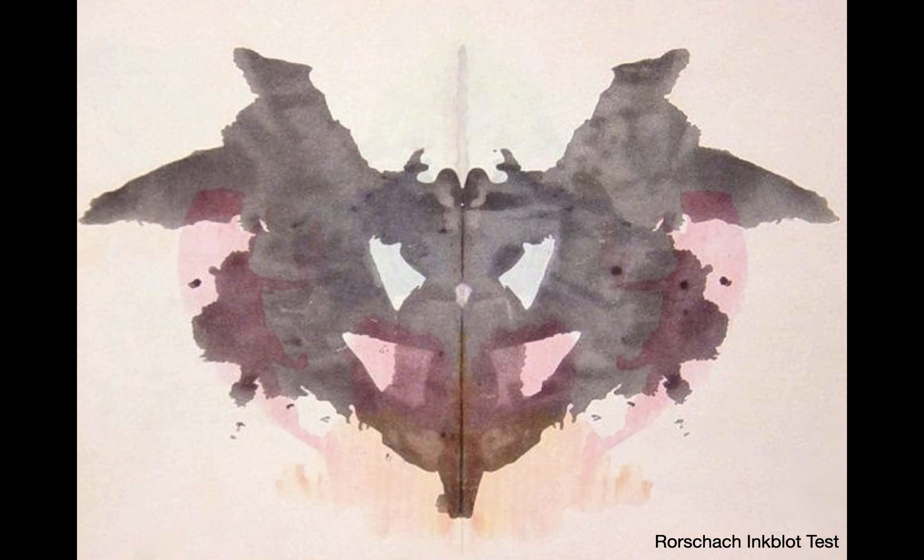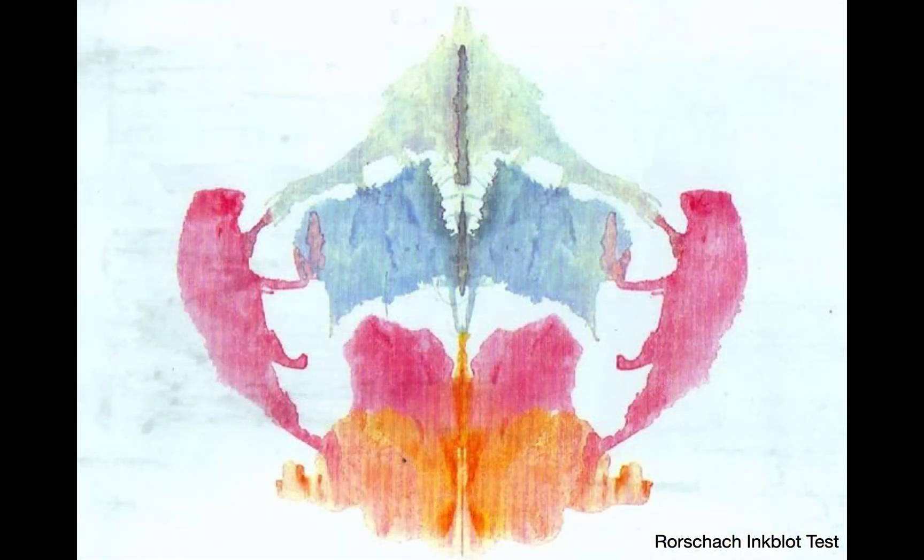A good and common answer for the second inkblot is a four-legged animal — perhaps lions, pigs, or bears on the sides — butterflies, a rib cage, maybe even a Christmas tree. The abundance of colors in this inkblot is designed to represent an emotional spectrum, and discomfort with it is typically associated with social anxiety and even emotional disorders.